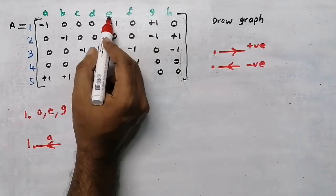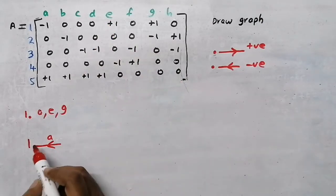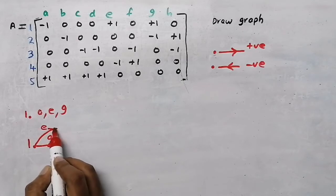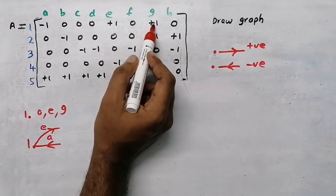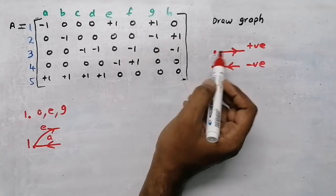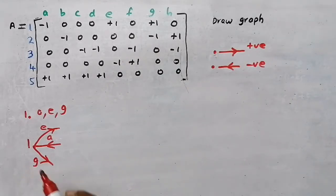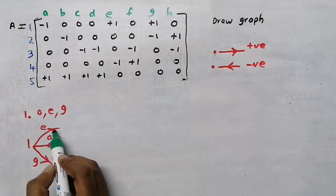Now branch e - it is positive. Positive means it is moving away from the node. Now branch g - g is also positive, positive means moving away. Now I need to know the end points, meaning where this branch is going to end.